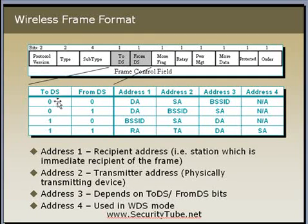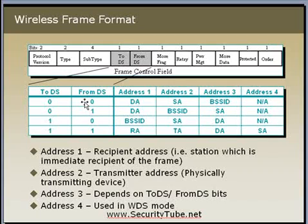For frames where both To DS and From DS are 0 — which are generally management or control type frames — these frames are always exchanged between the client and the AP with no other host involved. So Address 1 is the destination (e.g., the client's MAC), Address 2 is the source (e.g., the AP's MAC), and Address 3 is the BSSID. In summary: Address 1 is always the next destination, Address 2 is always the source, and Address 3 is the remaining address.